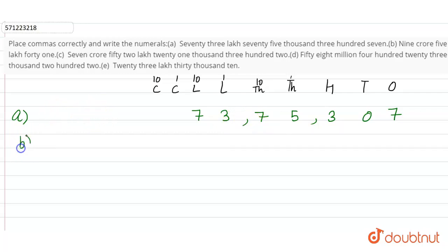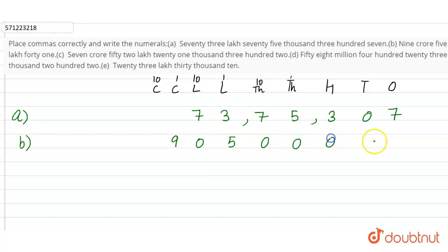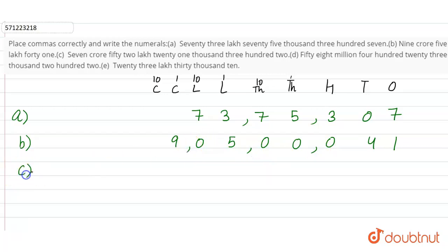Now Part B: it is asking 9 crore, 5 lakhs, 41. So 9 crore, then 0 for the remaining lakh places, then 5 lakhs, and 41 — written like this. Insert commas: after three digits and then after two digits.